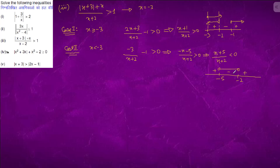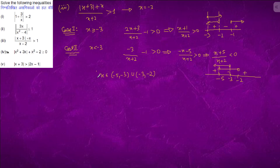We are told x < -3, so taking the common part, x is between -5 and -3. The final solution is x belongs to (-5, -3) ∪ (-3, -2). This is the solution.